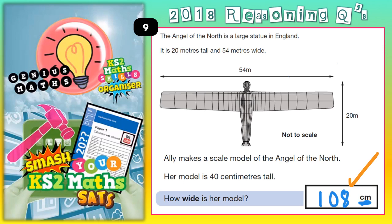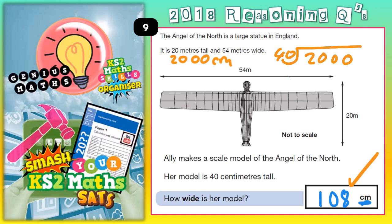So 20 metres — remember, in 1 metre there are 100 centimetres — so 20 metres is 20 lots of 100, which is 2,000 centimetres. Now we want to find how many times bigger the real thing is than the model. So we do 2,000 divided by 40. 40s into 2 won't go, carry the 2; 40s into 20 won't go, put a 0 and carry the 20, making 200; 40s into 200 goes 5 times; 40s into 0 goes 0. So the real thing is 50 times bigger than the model.